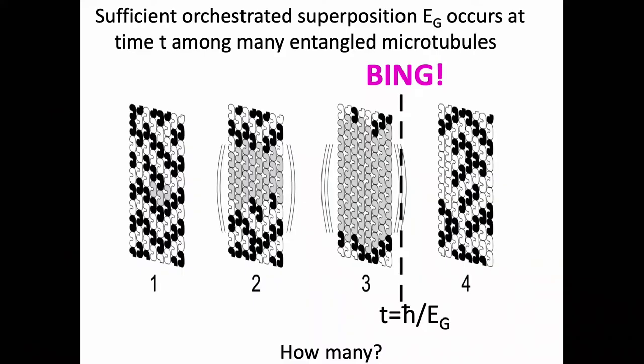It's not necessarily the space-time geometry out there; it's the space-time geometry in here, where the microtubules are. Sufficient orchestrated superposition occurs at time T among many entangled microtubules. The idea is that, as Roger said, proto-conscious moments are occurring in the spacetime randomly and ubiquitously all the time — which seems bizarre until you compare it to panpsychism, which is even more bizarre because that's a permanent state, whereas this is a process, a sequence of events.